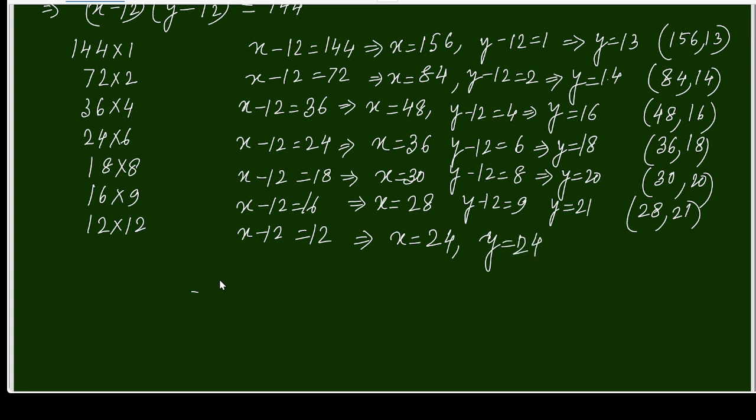So how many pairs are there? For the first one, you are getting two pairs because it can be 1 into 144 or 144 into 1. So it can be (13, 156) or (156, 13). So total pairs will be...